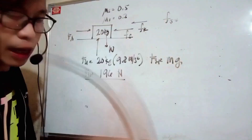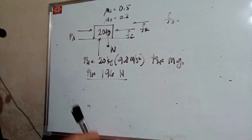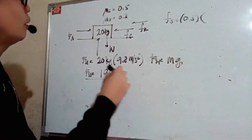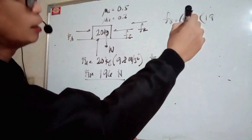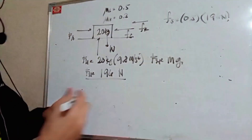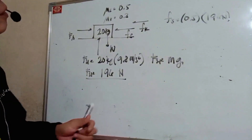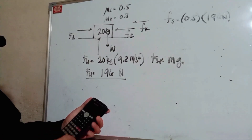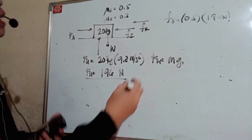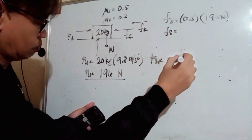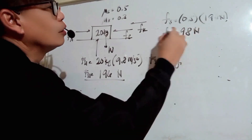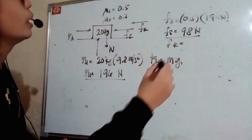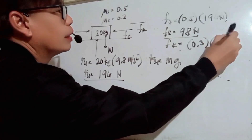For static friction, your mu is 0.5, so 0.5 multiplied by your normal force of 196 newtons. Now note that static friction uses a less-than-or-equal-to sign — your static friction may vary. Solving for Fk, we have 0.3 multiplied by 196.